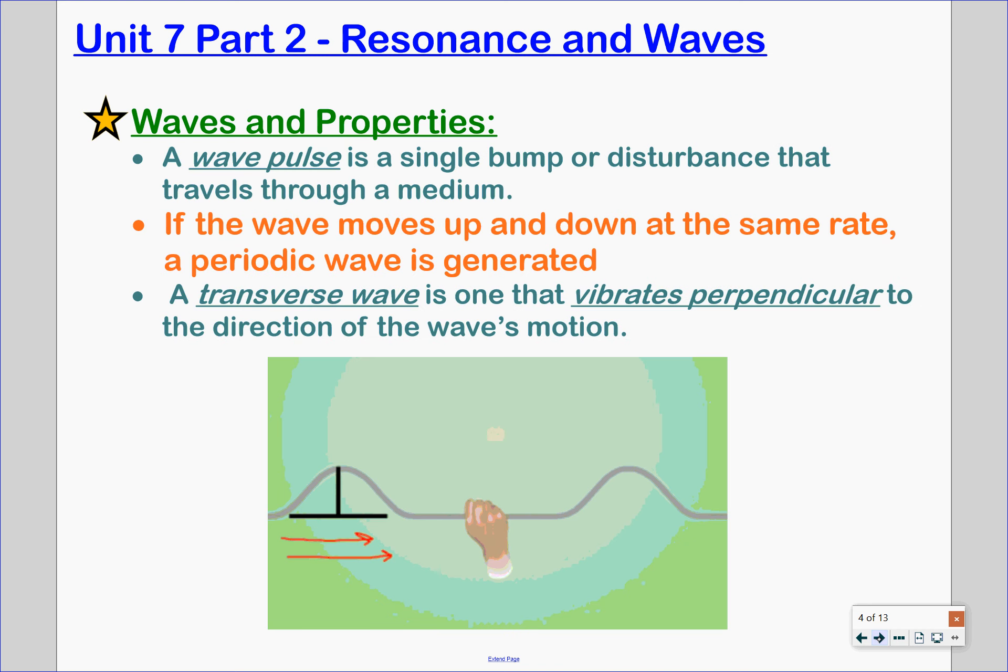Moving forward, a wave pulse is actually the disturbance that you can see traveling through the wave or through the medium. If the wave moves up and down at the same rate, that is an example of periodic motion. You're going to need to understand how to draw and illustrate these types of waves for part of your homework today. So a transverse wave is a particular wave that vibrates perpendicular to the direction of the wave's motion. So if you look here, you can easily see this is your perpendicular motion, meaning that the wave is moving up and down while the whole motion of the wave is moving left to right. So those are perpendicular vibrations or wave pulses there.